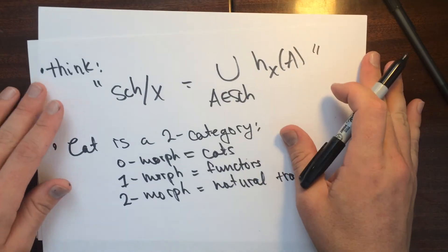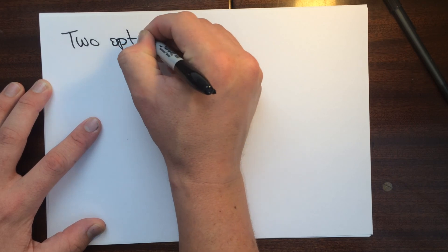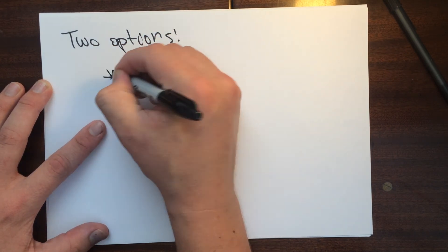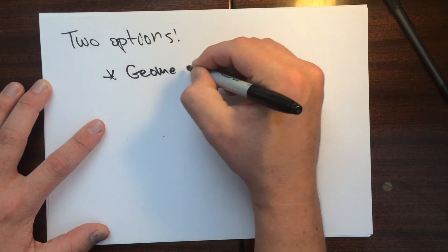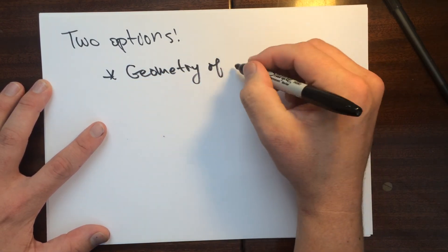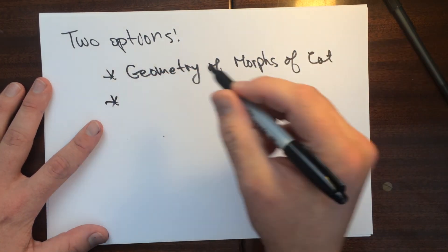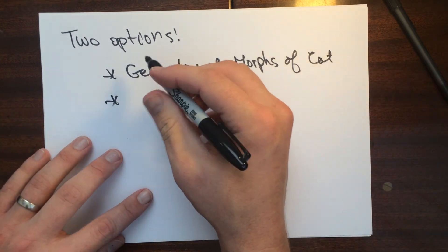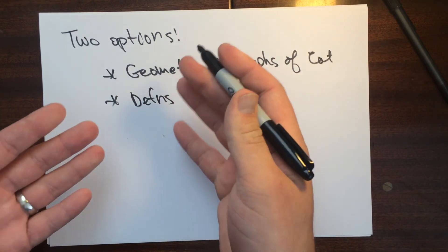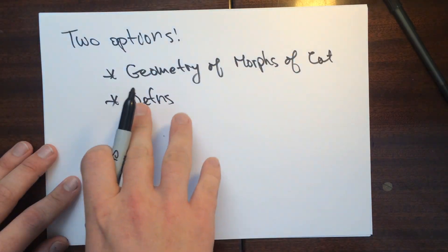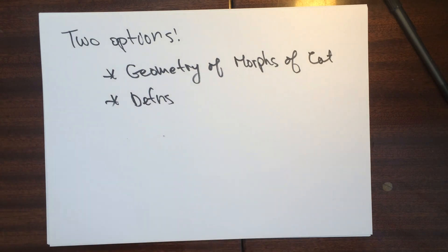So that's the stack associated to x — that's the idea. Now there are two options for what to watch next: I can talk about the geometry of morphisms of categories and functors, or I can give you the actual definitions — the real definitions of algebraic stacks, which requires some of this background. You can pick whichever one you want to see. Thanks for watching, see you in the next video.